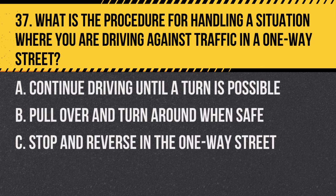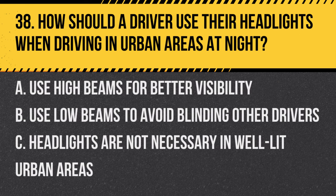Question 37. What is the procedure for handling a situation where you are driving against traffic in a one-way street? A. Continue driving until a turn is possible. B. Pull over and turn around when safe. C. Stop and reverse in the one-way street. Answer: B. Pull over and turn around when safe. If you find yourself going against traffic, find a safe way to turn around.